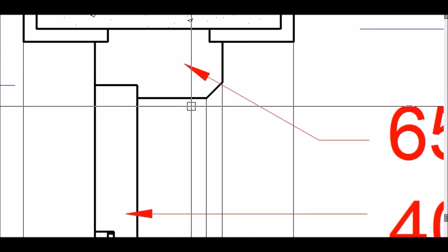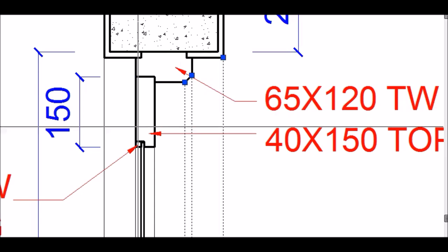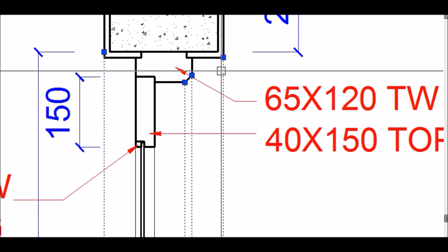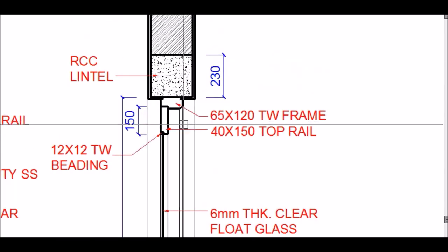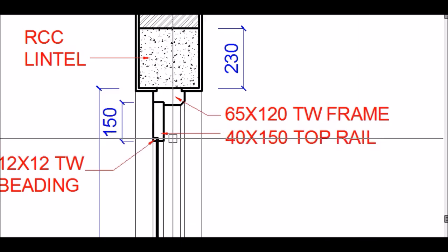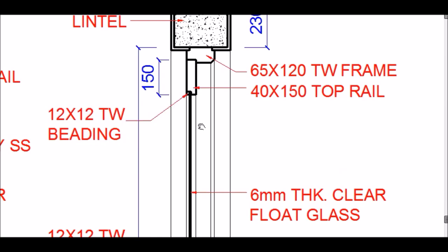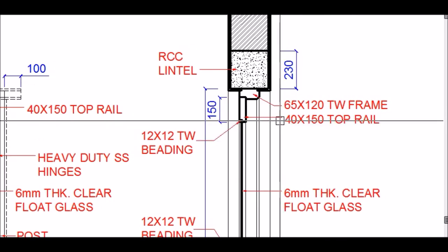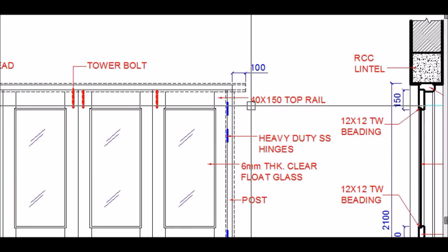On the front face of the frame, a chamfer is given for decorative purposes, producing lines visible in elevation. Just inside the top of the door is a member called the top rail, which is 40mm by 150mm. The glass is fixed into the top rail with 12 by 12mm teakwood beading. This top rail is also clearly visible in the elevation.